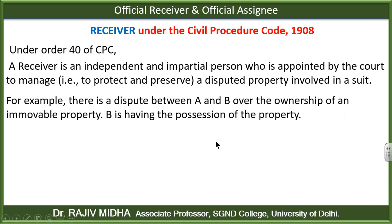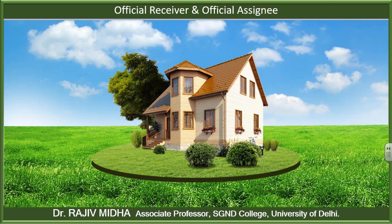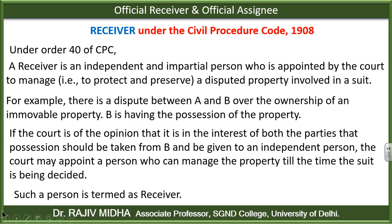For example: there is a dispute between A and B over the ownership of an immovable property. B is having the possession of the property — B के पास उस property का कबजा है. A कहता है कि यह property मेरी है और B कहता है यह property मेरी है. If the court is of the opinion that it is in the interest of both parties that the possession be taken from B and given to an independent person, the court may appoint a person who can manage the property till the time the suit is being decided. Then that person is termed as receiver.